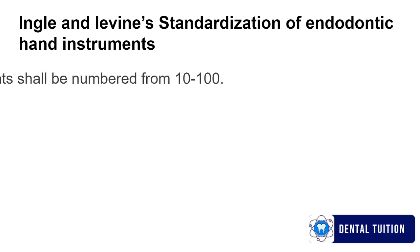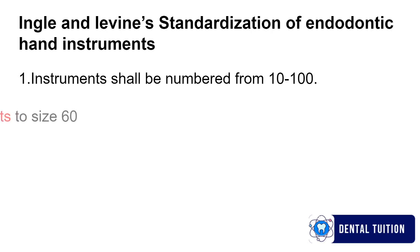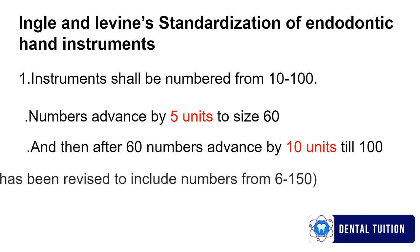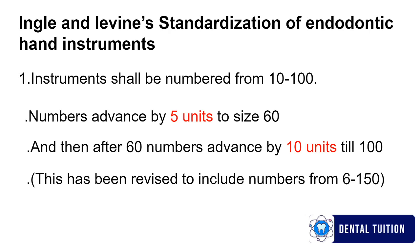First, instruments shall be numbered from 10 to 100 and the number advances by 5 units to size 60, and thereafter the file number has reached 60, numbers advance by 10 units till 100. This data has been revised to include numbers from 6 to 150.